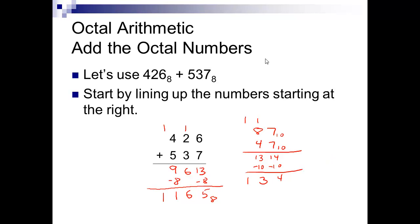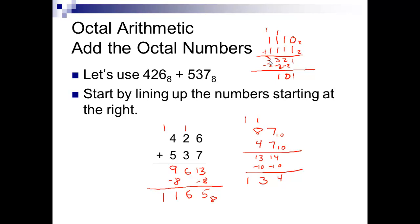We could also do binary the same way. For example: 1 plus 0 is 1, bring it down. 1 plus 1 is 2 — these are base 2 numbers, so it's base or larger — subtract 2, get 0, carry a 1. Then 1 plus 1 plus 1 is 3 — 3 minus 2 equals 1, carry a 1. And again, 3 minus 2 equals 1, carry a 1. So it works with binary too — it works with all these numbering systems.